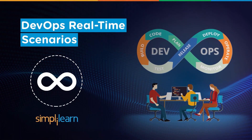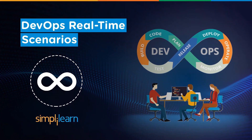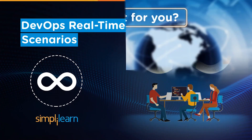Hey everyone, my name is Ashan and I welcome you all to this session. In this video we will have a look at some DevOps real-time scenarios. DevOps has helped businesses of all types, whether startups or Fortune 500 companies. All of them have started moving towards DevOps as they are interested in improving the speed and quality of software development. Organizations like NASA, Amazon, Netflix, Walmart, and Facebook have benefited from DevOps.